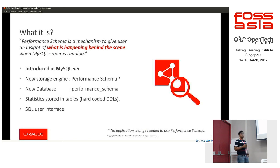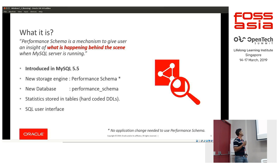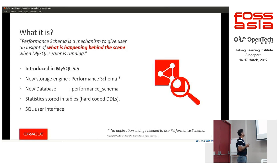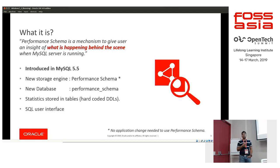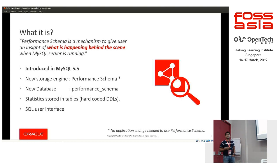Performance Schema was introduced in MySQL 5.5. We introduced a new storage engine called Performance Schema, and a new database called performance_schema. The statistics of the running MySQL server are stored in tables that are part of this database. These tables have hardcoded DDL — you are not supposed to modify the structure of the tables, and you cannot add or delete tables. We also provided a SQL user interface, so if you want to get the statistics of the running MySQL server, you can simply fire a SQL query and get the data.